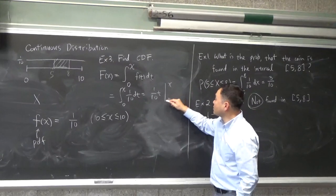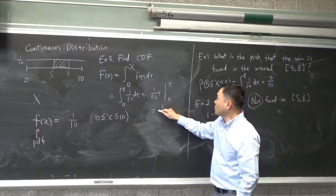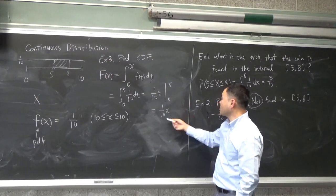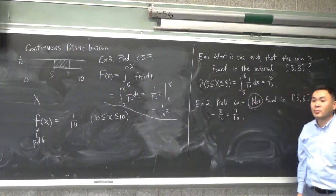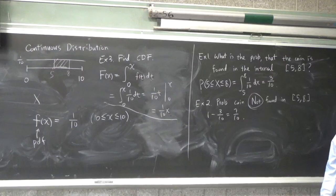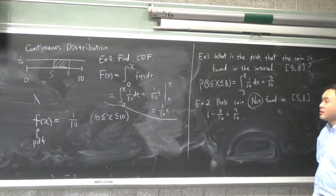1 over 10t, and then you plug in x and 0, you get 1 over 10x minus 0. So, that's your CDF.